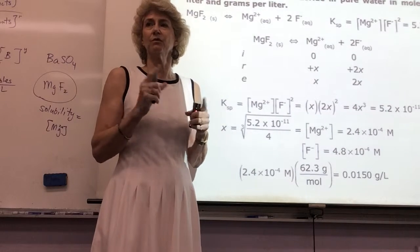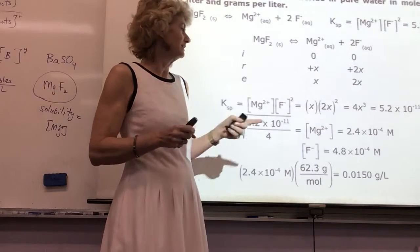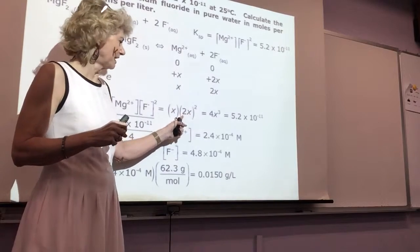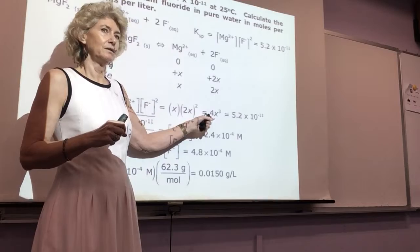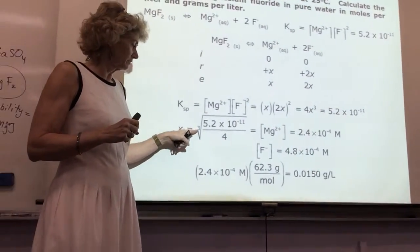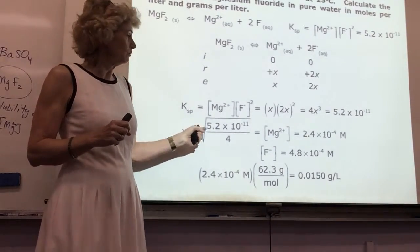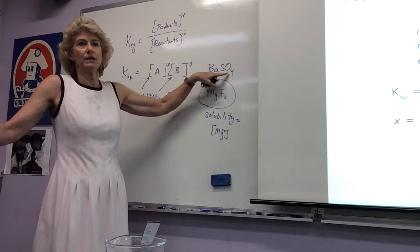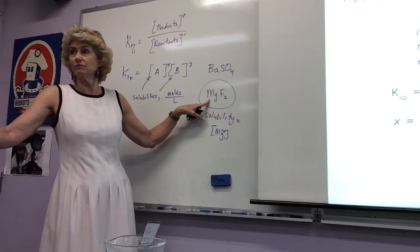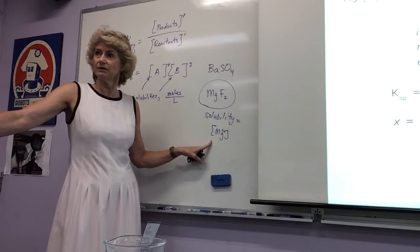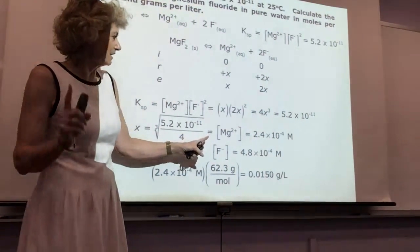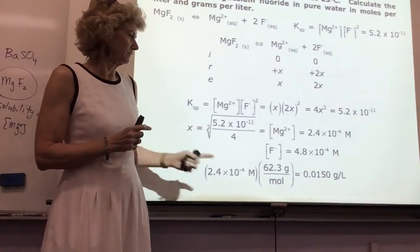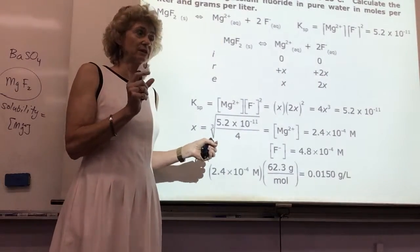For MgF₂: Ksp = 4X³. Solve for X — your calculator can do a cube root. The cube root gives the magnesium ion concentration, which is the singleton. That's the whole compound's solubility. Twice that is the fluoride concentration. Then you can convert to grams per liter. The only hurdle here is that word 'solubility' getting confused.